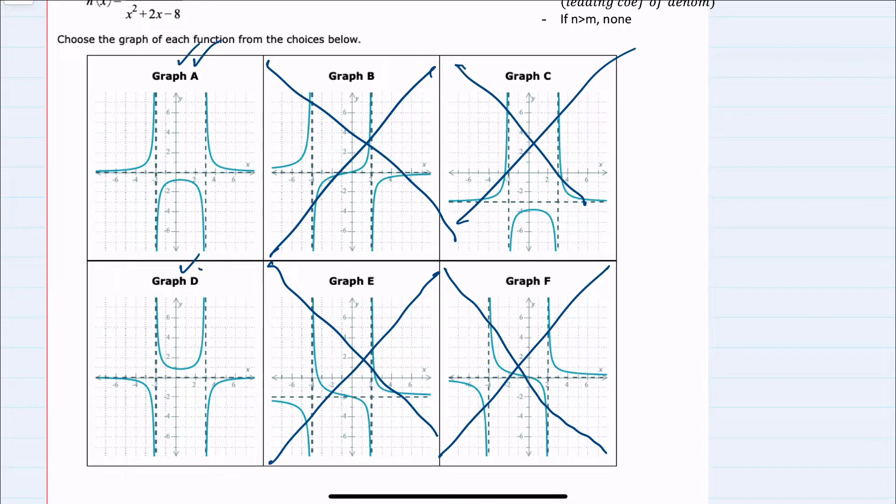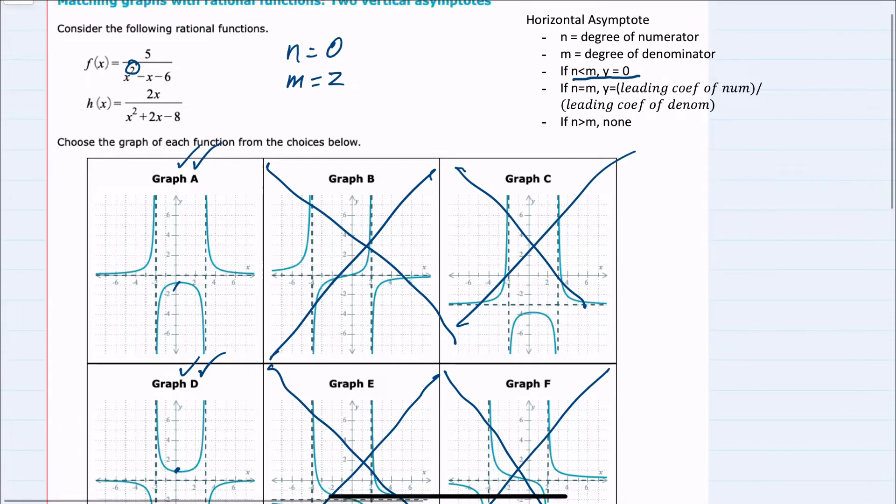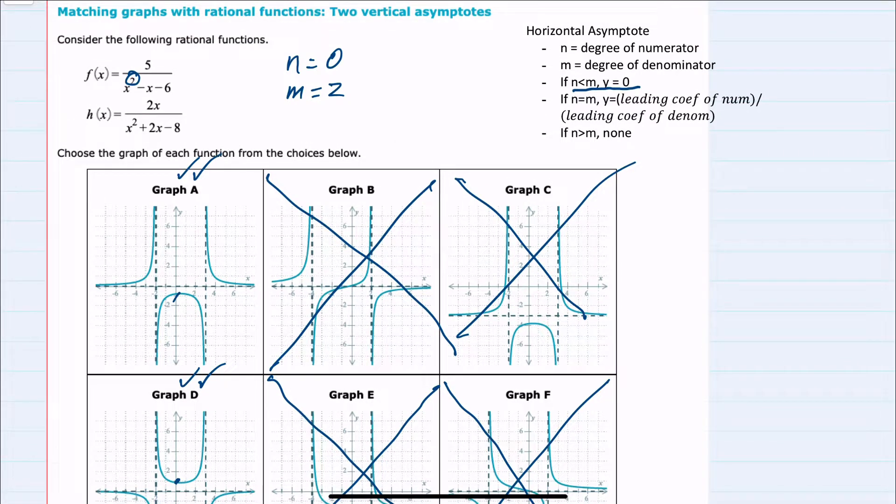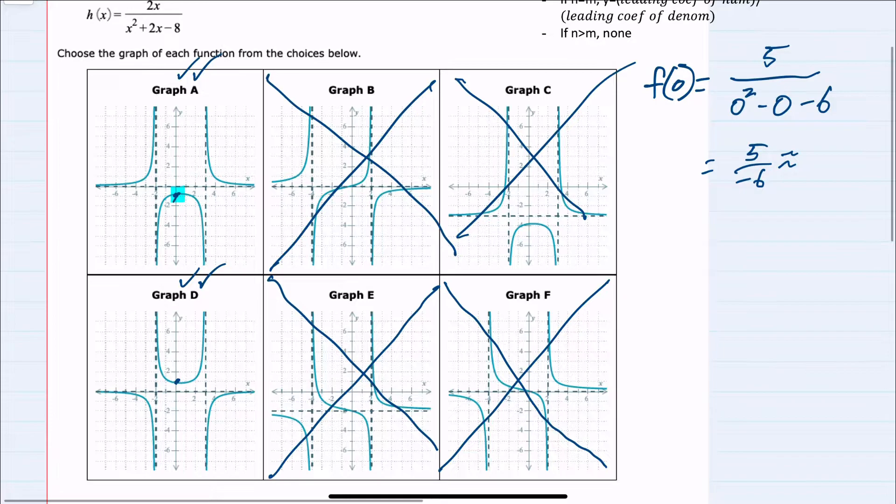We have narrowed it down to either a or d, and one way that I can see graphs a and d are different is that they have different y-intercepts. So I can look back at f of x to determine the y-intercept. This would be the y value when x is zero. So f of zero, we would replace our x's with zero. So zero squared minus zero minus six in the denominator gives us five over negative six, so almost negative one. Importantly, it's negative.